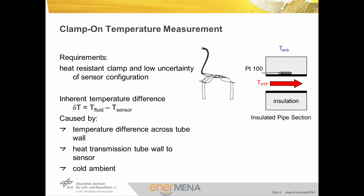The temperature sensor is clamped to the outside of a hot pipe with the hot HTF flow inside. It is in the nature of such a setup that it is prone to actually detect a temperature in between the outer wall temperature of the pipe and the ambient. In order to reduce the influence of the ambient, the setup is to be insulated. However, a temperature difference between the fluid temperature and the sensor temperature will remain, due to the temperature difference across the tube wall, the heat transmission from the tube wall to the sensor, and the exposure to the cold ambient. An optimized sensor configuration aims at reducing these perturbations to a minimum.